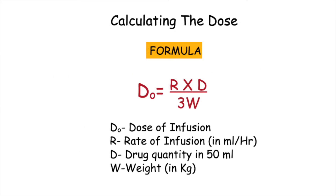So let's see how to calculate the dose. The formula we will be using is: Dose = RD / 3W. R is the rate of infusion in ml per hour. D stands for drug quantity in 50 ml of diluent. W stands for the weight of the patient, to be taken in kg.